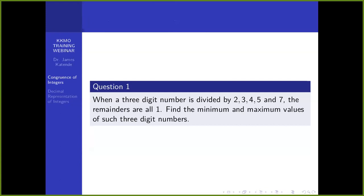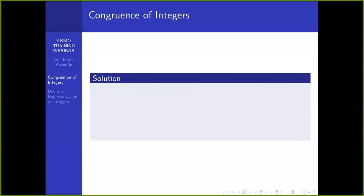Now we get our hands busy with a question. It says we have a three-digit number which is divided by 2, 3, 4, 5, and 7, and the remainders are all 1. When you divide the number by any of these numbers, the remainder will be 1. Find the minimum and maximum values of all such three-digit numbers.